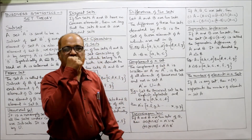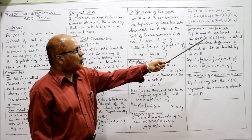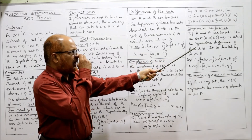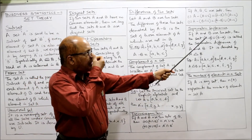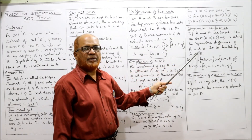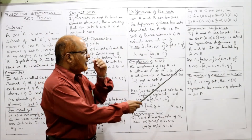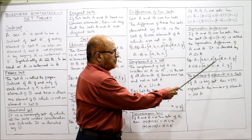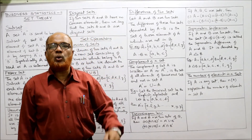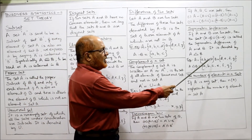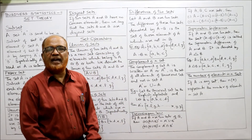Symmetric difference: if A and B are two sets, then the set (A minus B) ∪ (B minus A) is called the symmetric difference of A and B, denoted as A △ B. For example, if A = {A, B, C, D} and B = {D, E, F, G}, we exclude elements common to both — D is in both, so exclude it. The remaining elements are A, B, C, E, F, G. These are the elements of A △ B.